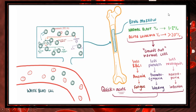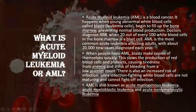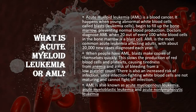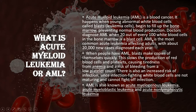Now, what is acute myeloid leukemia or AML? AML is a blood cancer that happens when young abnormal white blood cells called blasts begin to fill up the bone marrow, preventing normal blood production of RBCs, platelets, and WBCs. Doctors diagnose AML when 20 out of every 100 blood cells in the bone marrow are blast cells.